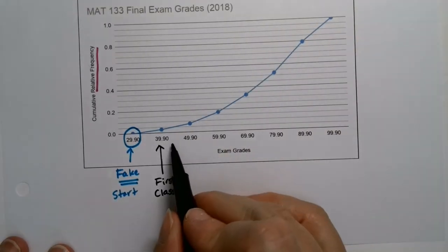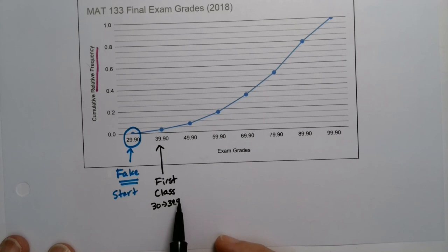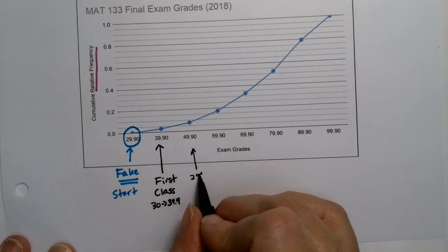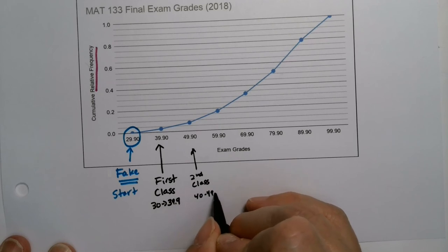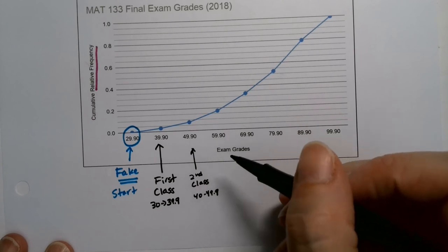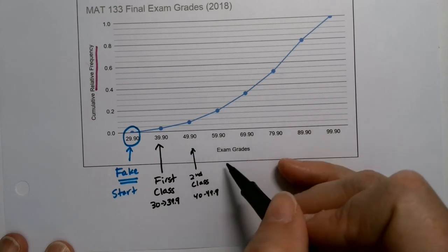Okay. So the second class, right? If the first class was 30 up to 39.9, the next number after that is 40. So the second class, you can see, ends at 49.9 because these are the upper class limits. So the second class is 40 to 49.9. And we actually have this table, of course, because we have it earlier in the notes. So you can actually verify that I'm right. But this is how to read this from this particular graph.